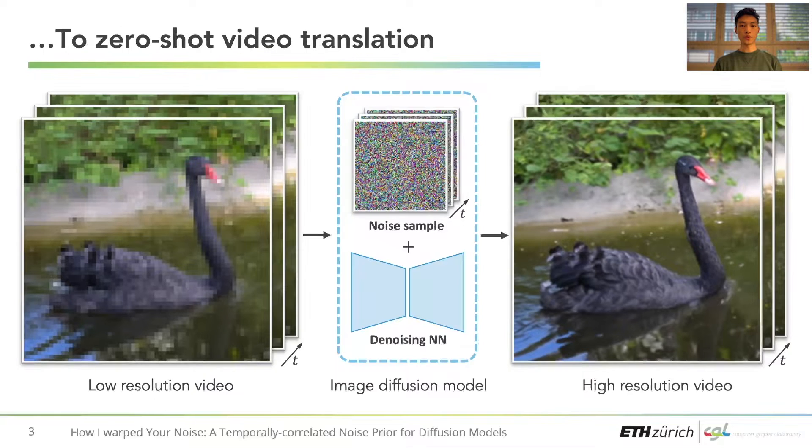But how can we repurpose image-to-image diffusion models to also work with temporal data, such as videos? For that, we can stack a set of noise samples in the time dimension.